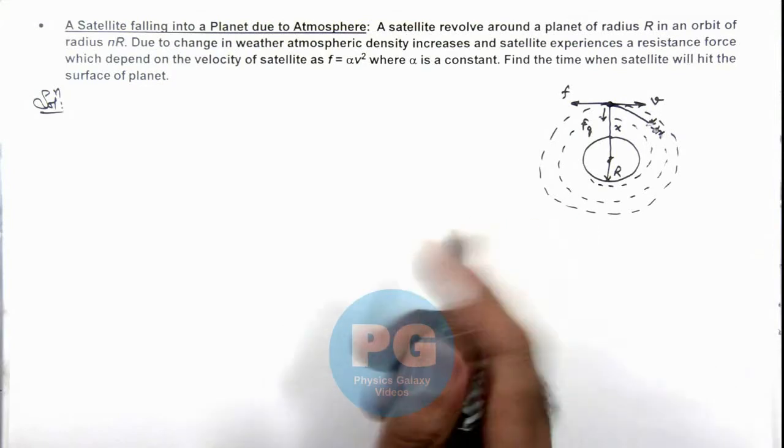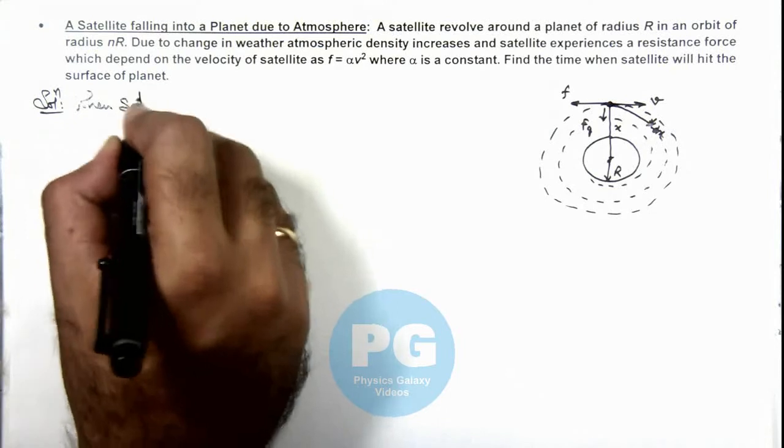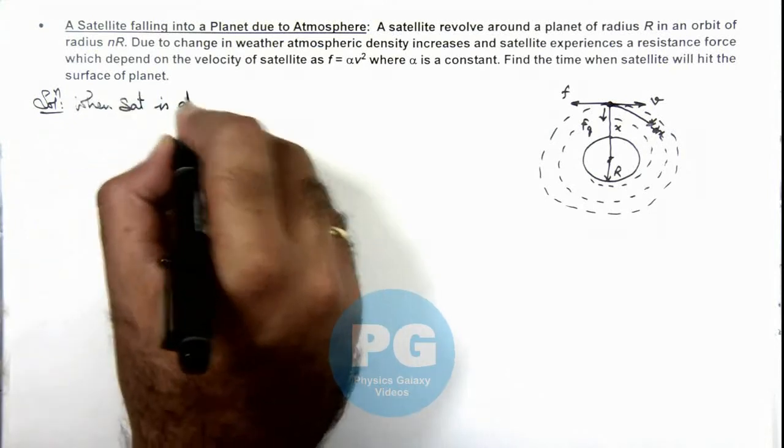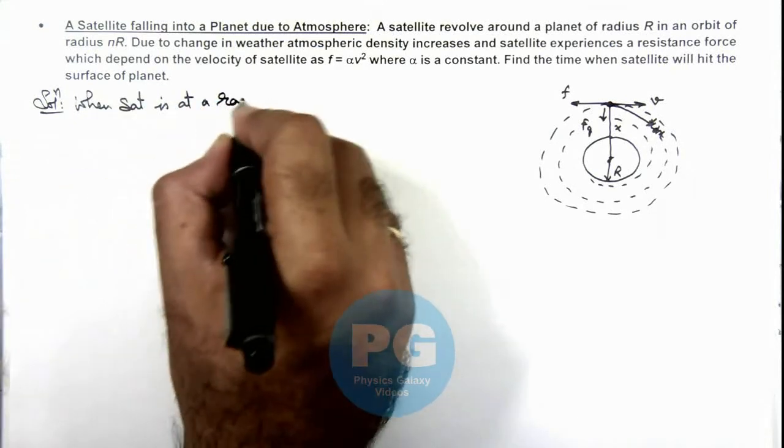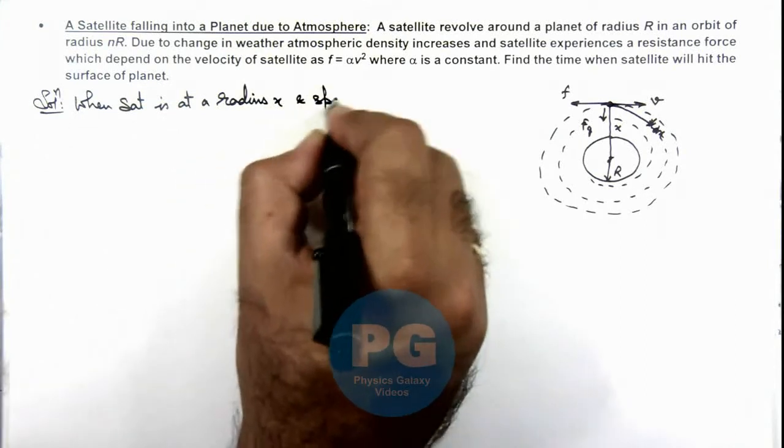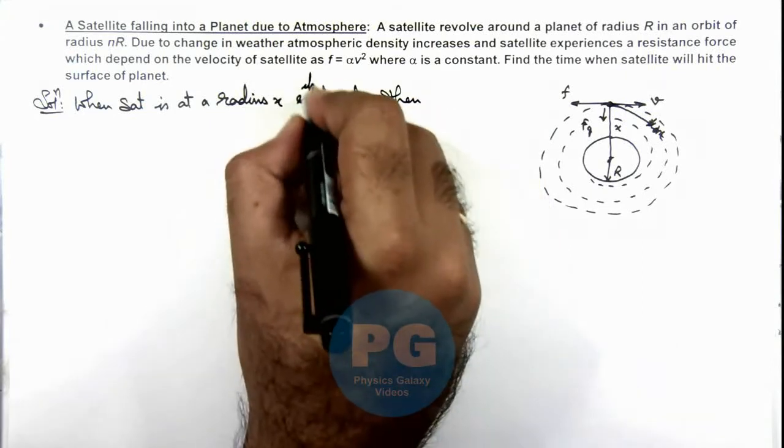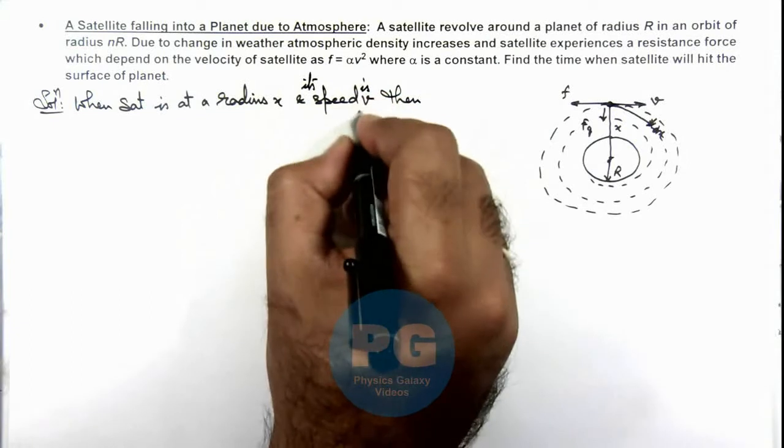Now in this situation we can use: when satellite is at a radius x and speed v, then in a short time dt, if its radius decreases by dx.